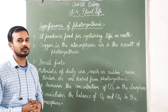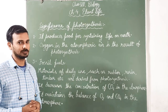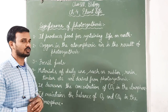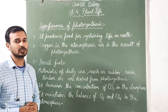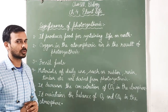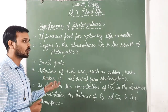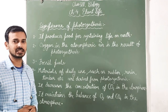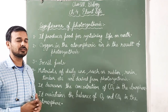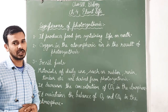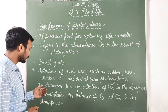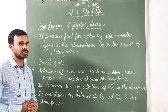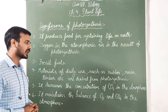Point three: fossil fuels. The energy stored by green plants through the process of photosynthesis millions of years ago is stored in the form of fossil fuels — coal, petroleum, and natural gas — which we are using nowadays.